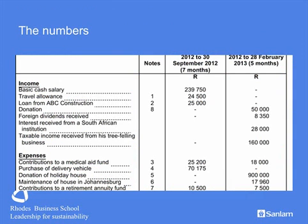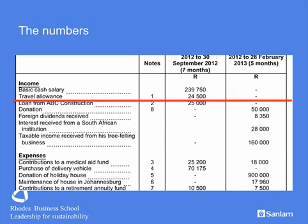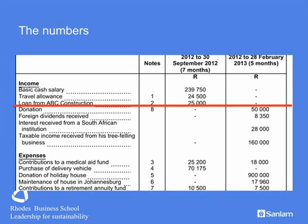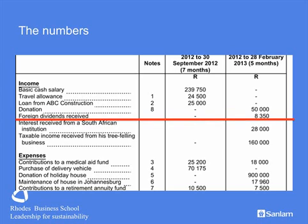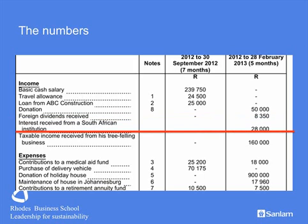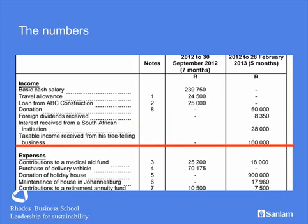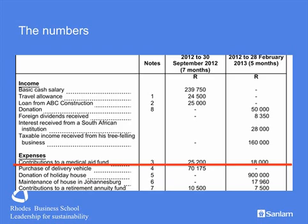Reading through the figures, you simply highlight what you need. I need the basic cash salary — very easy. There is the total amount of the travel allowance, which is in part two. The loan from the employer will give rise to a fringe benefit that I'll have to calculate. Donation receipts are tax free but we need to mention that. Foreign dividends are fully taxable but a portion is exempt — a calculation is required. Interest received from a South African bank requires the exempt portion deducted. The business income may require adjustment. The medical aid fund dealings will require a complicated calculation.